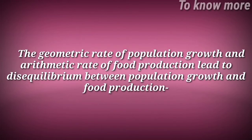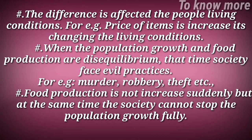The geometric rate of population growth and arithmetic rate of food production lead to disequilibrium between population growth and food production. This difference affects people's living conditions — for example, prices of items increase, changing living standards. When population growth and food production are in disequilibrium, society faces evil practices such as murder and robbery.